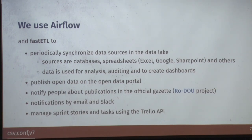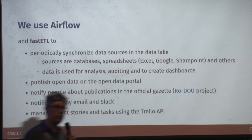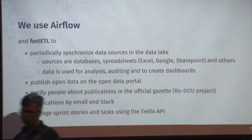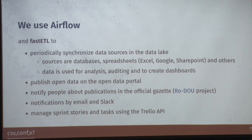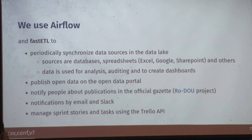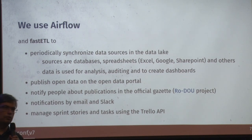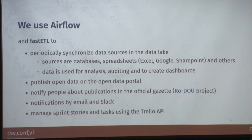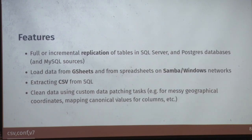We notify people when specific terms or their names appear in the official Gazette — the government's official publication for laws and norms — and they receive an email for that. We can also send Slack notifications about many things. We also use it to manage our own sprints: at the end of the sprint, everyone receives an email with every task they have done, which helps manage remote work reporting.